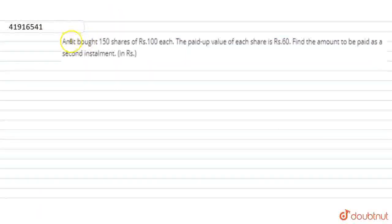Hello everyone, now let's start the question. The question says Amit bought 150 shares of Rs. 100 each. The paid up value of each share is Rs. 60. Find the amount to be paid as the second installment in Rs.